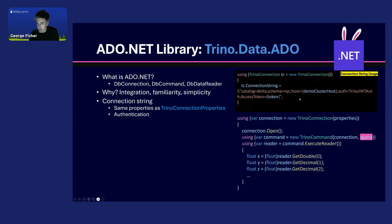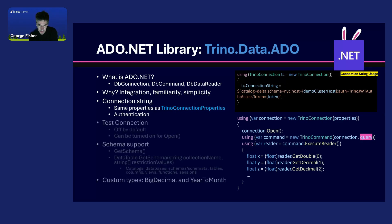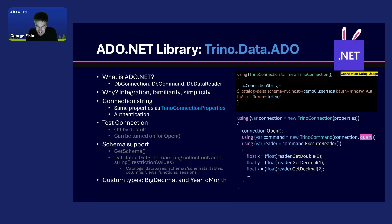Authentication is also possible through the connection string, even if your auth library is not built in — it will find any auth library in the class loader and allow you to use that. Basic things you'd expect: test connection, which people use a lot in ADO.NET. It's off by default because it's slow, but if you want it you can turn it on for open connection. Schema support — this is a bit of a weird thing in ADO.NET, but it matches 100% what the SQL Server ADO client does.